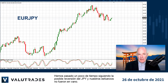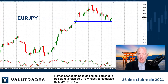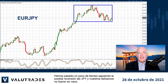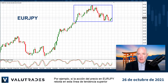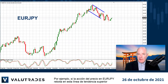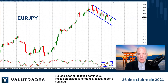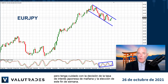We've been spending a lot of time following the potential reversal of the Japanese Yen and our efforts were not wasted. For example, if price action on EURYEN bounces off this upper trend line and the stochastic oscillator continues its bearish indication, the downtrend should continue — but watch out for tomorrow's Japanese interest rate decision and this weekend's election.